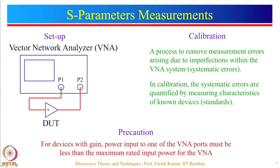Network measurements are done using a vector network analyzer (VNA). The DUT is placed across the two ports of the VNA for a two-port DUT, or connected to one port for a one-port DUT. Before starting measurements, calibration must be done for the VNA. Calibration is a process to remove measurement errors arising from imperfections within the VNA system, which are called systematic errors.